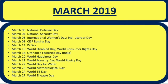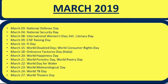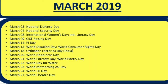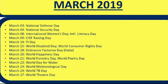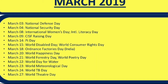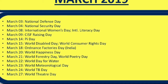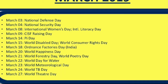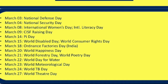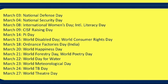Next is March 2019. 3rd March: National Defense Day. 4th March: National Safety Day. 8th March: International Women's Day — this is very important. 9th March: CISF Raising Day. 14th March: Pi Day. 15th March: World Disabled Day or World Consumer Rights Day. 18th March: Ordnance Factories Day. 20th March: World Happiness Day. 21st March: World Forestry Day and World Poetry Day.